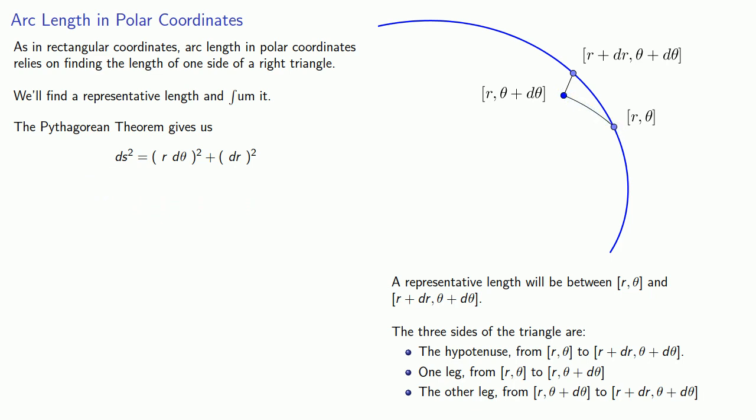And so our representative length is going to be the square root of (r dθ)² plus (dr)². And we can simplify that by factoring out a dθ. And this leads us to the following theorem.